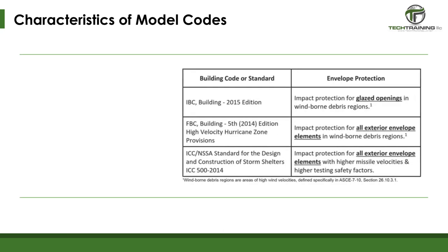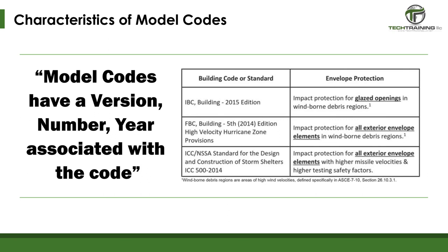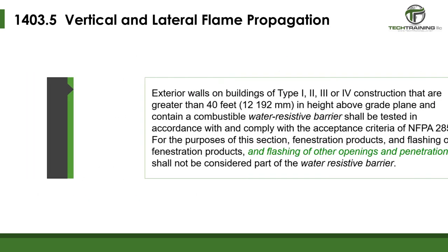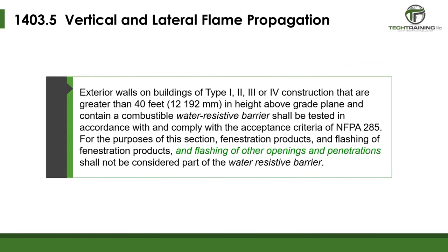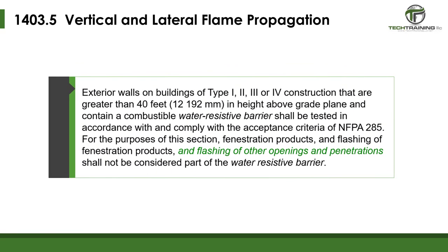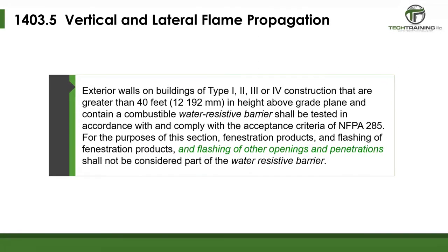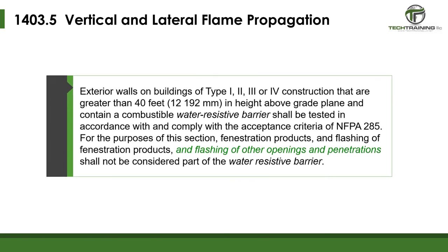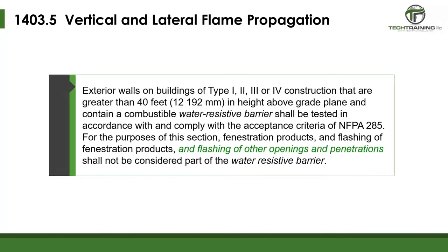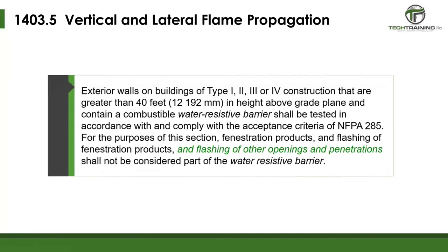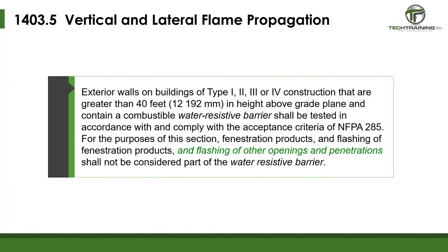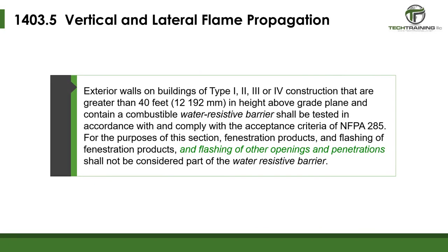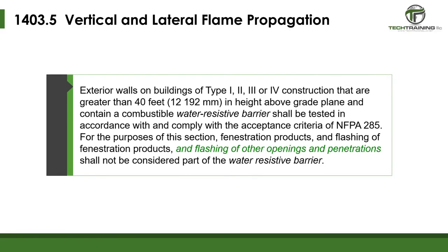Model codes will have a version, year, or number associated with them. Model codes are updated on a standard cycle, which allows jurisdictions to differentiate between versions of the code. Here's an example of a model code from the IBC, Chapter 14, Exterior Walls, Section 3, Subset 5. 'Exterior Walls' is italicized, meaning there is a specific definition in Chapter 2. Note the word 'shall' throughout the code, leaving no question as to what should be done. Here, we also see an amendment from Massachusetts — Massachusetts has adopted the code, made an adjustment or amendment, and it is now legally enforceable in the state of Massachusetts.